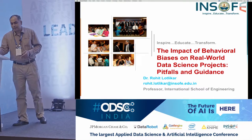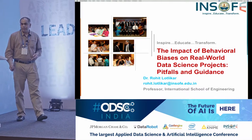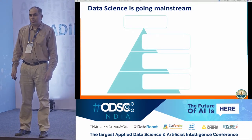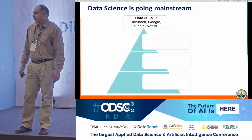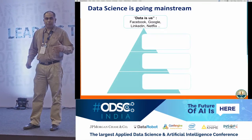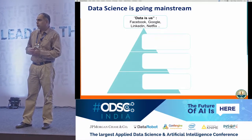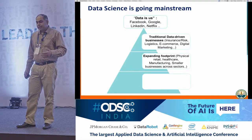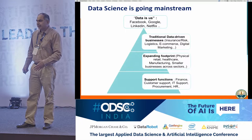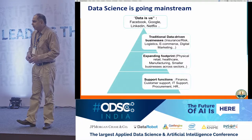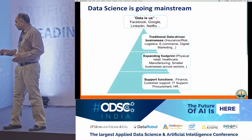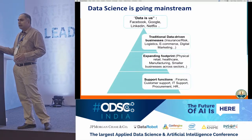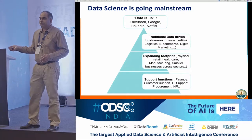Let's look at what's happening in data science these days and why this is becoming more important. Data science was initially limited to a few companies — the Googles, Facebooks, Netflixes. But today, data science is going down the ladder. Even a decade ago, it was pretty much traditional businesses like insurance, logistics, e-commerce, and digital marketing that were the main users of data science.